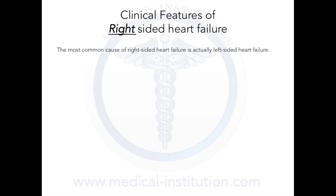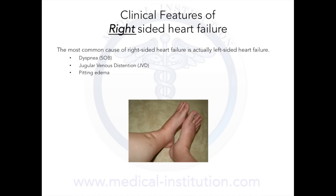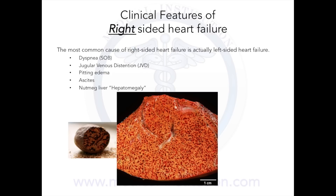The most common cause of right-sided heart failure is actually left-sided heart failure. Common clinical features include dyspnea since the right heart is unable to pump blood into the lungs to get oxygenated, jugular venous distension since the jugular veins cannot empty their blood into the congested right atrium, pitting edema due to fluid overload and increased hydrostatic pressure, ascites due to fluid accumulation in the peritoneal cavity, and nutmeg liver due to chronic passive congestion of the liver, which resembles a cut nutmeg.